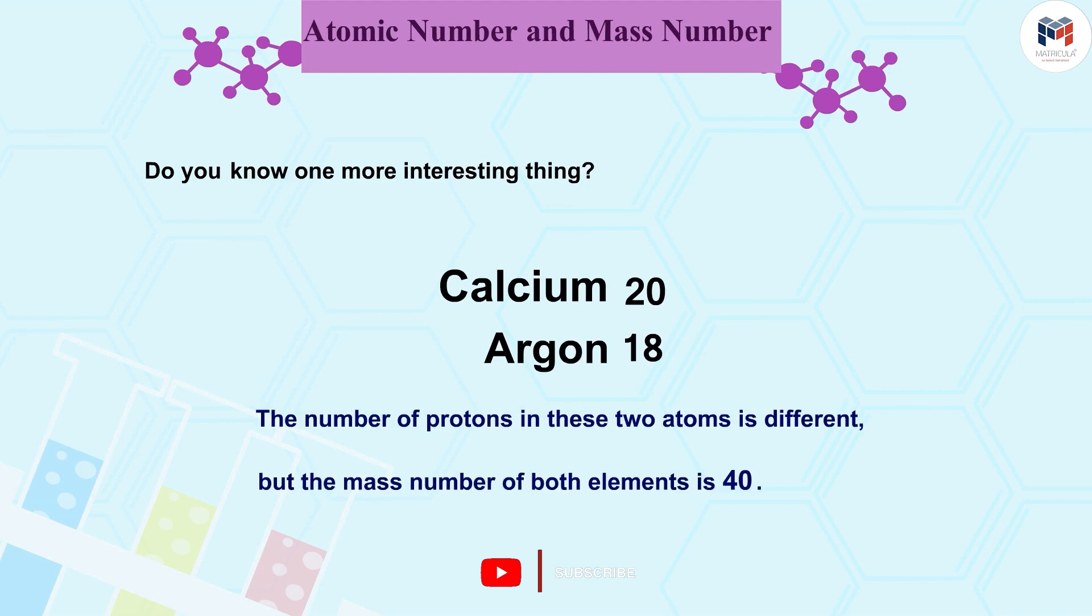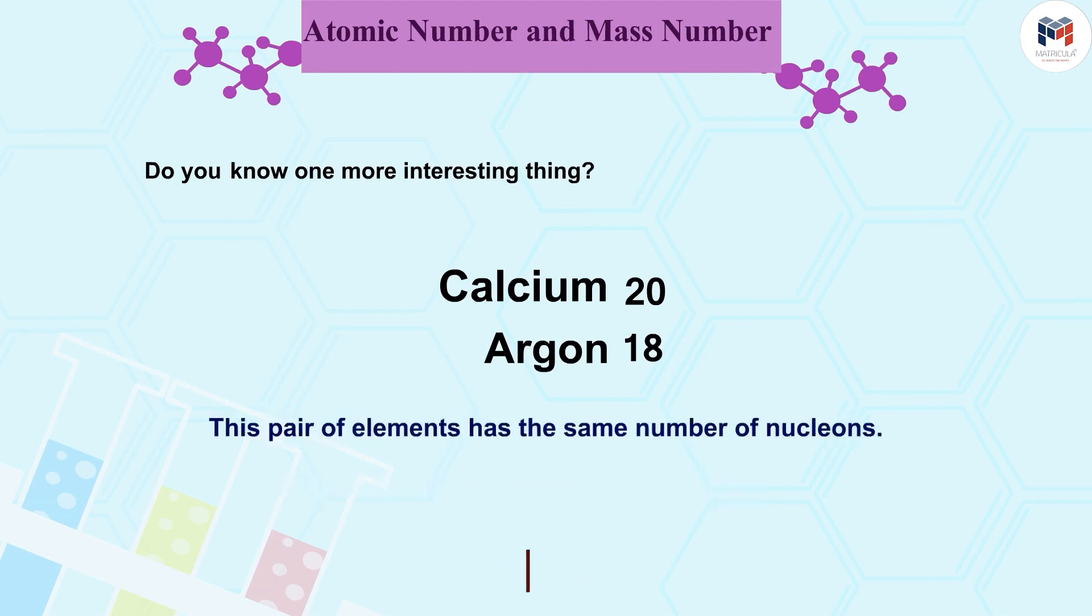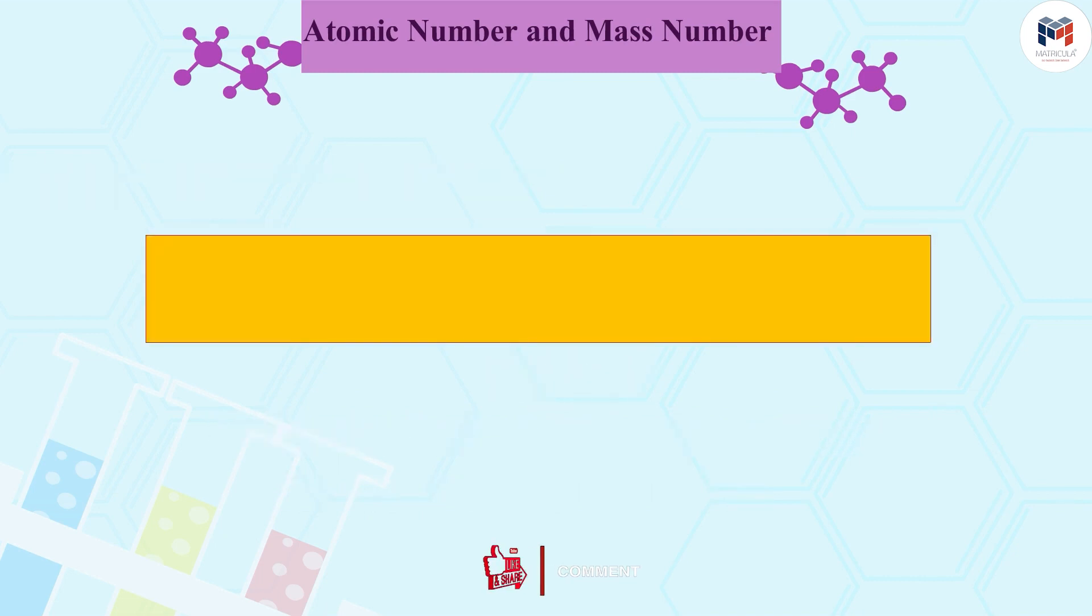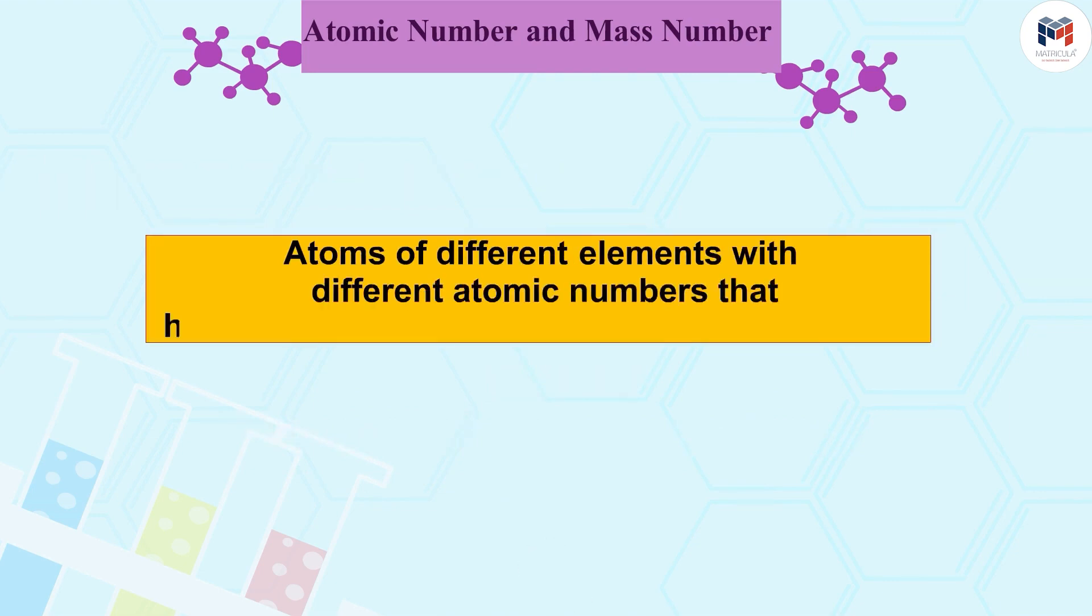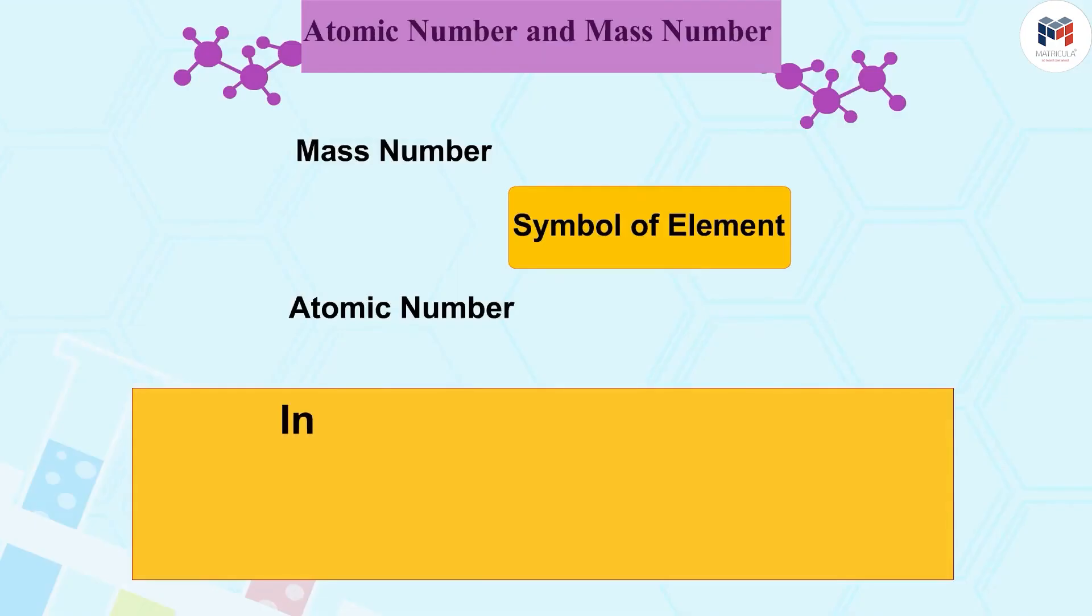In other words, this pair of elements has the same number of nucleons. Atoms of different elements with different atomic numbers that have the same mass number are called isobars.